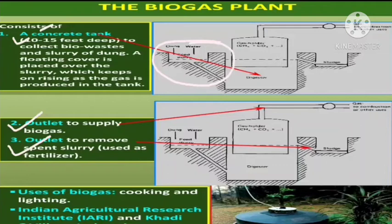Here you can see the tank where waste dung and water are collected, and a slurry of dung is fed in. This has a floating cover placed over the digester, which moves upward when gas is produced. The floating cover moves into the collecting chamber, where the mixture of carbon dioxide and methane gases is collected. The gas produced is removed and supplied through the outlet pipe for consumption.